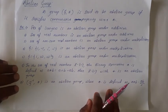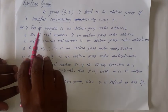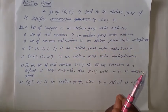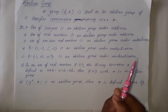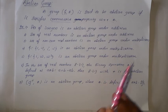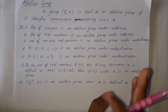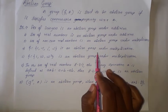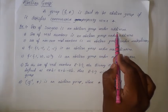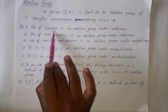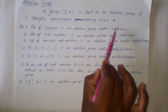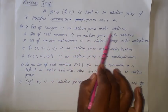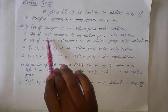Here we have some examples of Abelian groups. The first one is: the set of integers Z is an Abelian group under addition. We have already proved that the set of integers is a group under addition by satisfying the four properties — Closure, Associative, Identity, and Inverse laws. Along with those, if we satisfy the Commutative law under addition, then we can say that the set of integers is an Abelian group under addition. The second one is: the set of real numbers is an Abelian group under addition.